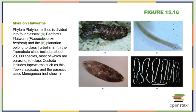Phylum Platyhelminthes can be divided into four classes: Turbellaria, which includes the Bedford flatworm; Trematoda; Cestoda; and Monogenea. Flatworms are all pretty basic in their biology — exactly as they sound: very, very flat worms.